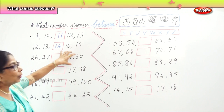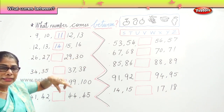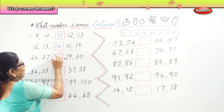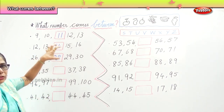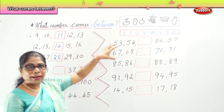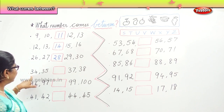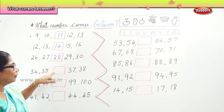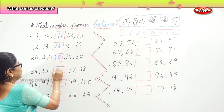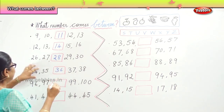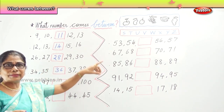The next row: 26, 27, __, 29, 30. Very good — 28! So: 26, 27, 28, 29, 30 — numbers in order, forward. Next: 34, 35, __, 37, 38. The answer is 36. So: 34, 35, 36, 37, 38.